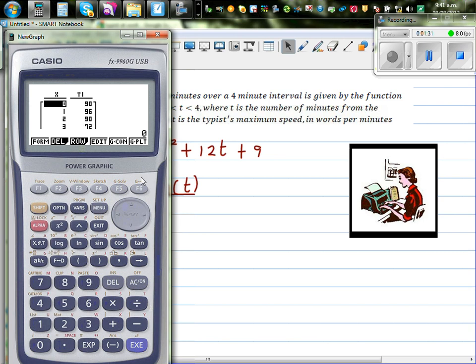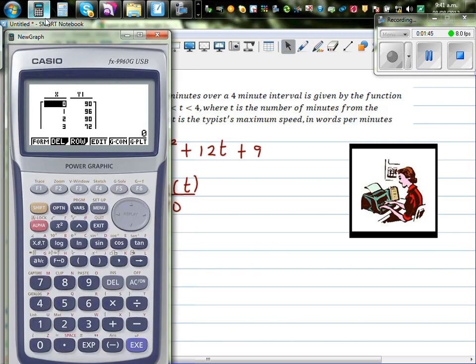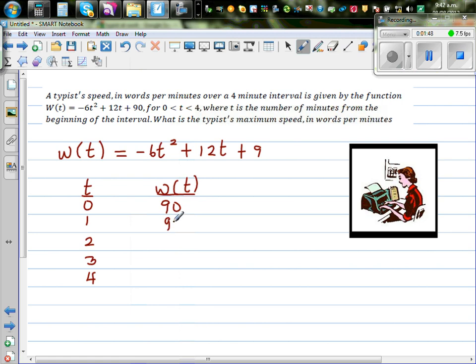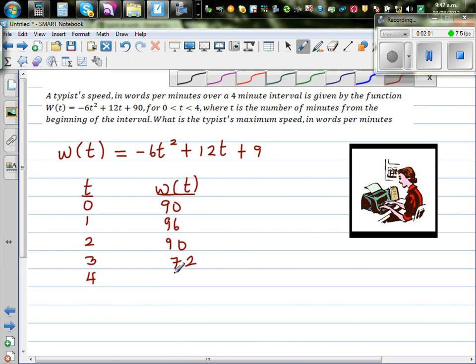So you start at 90 minutes, then 96, then 90, 72. It's 90, 96, 90, 72. Then you reach 96, then you come back to 90, and then you're coming back to 72. At 4 minutes, of course 4 should not be included, it is 42. So 4 minutes it's 42.